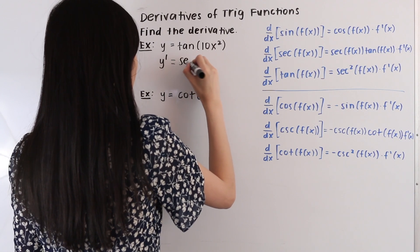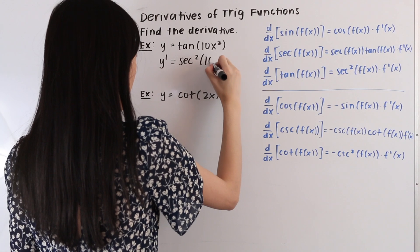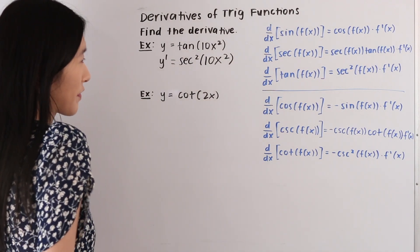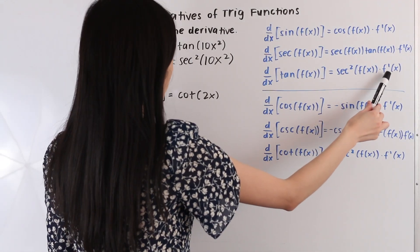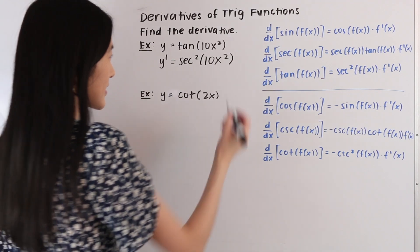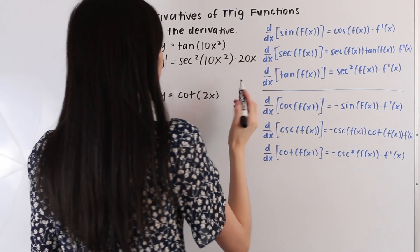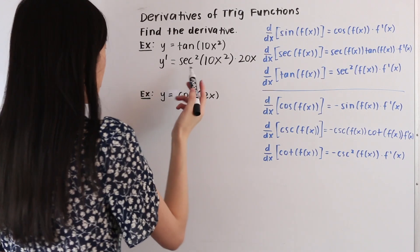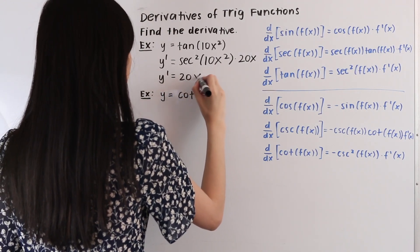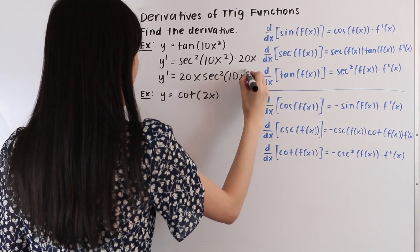So we have secant squared, and we're going to keep the angle the same. So this angle here is equal to 10x squared. And then we're going to multiply by the derivative of our angle. So the derivative of 10x squared is equal to 20x. And now let's go ahead and move this term out in front. So we end up with y prime is equal to 20x times secant squared of 10x squared.